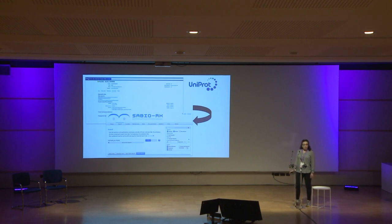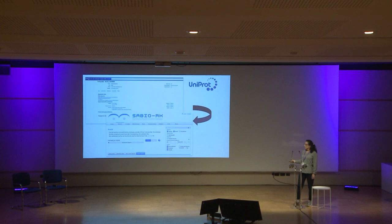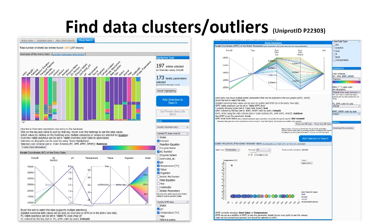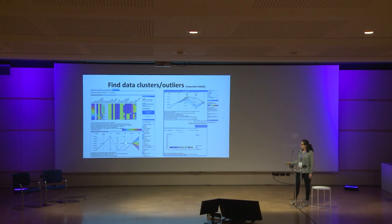SABIO-RK is linked from the UniProt database. If you go to the cross-references or external links in UniProt, you will find SABIO-RK. Clicking on it brings you to our database, which is then searched by this UniProt ID. You get an overview for this specific protein about the data stored in our database, including pH and temperature distribution and which tissues are related to some data.